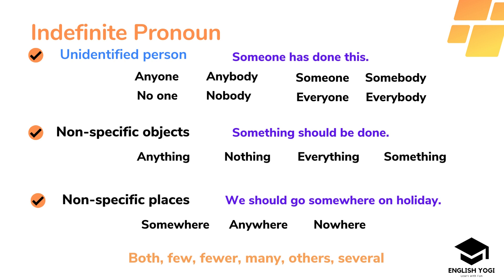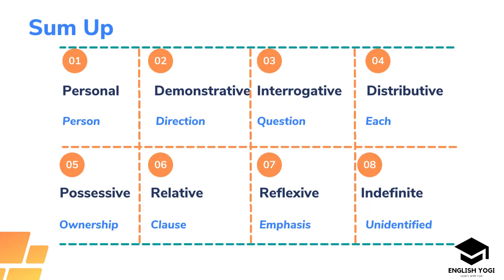Putting it in very simple language, indefinite pronouns are pronouns which are used for unidentified persons, non-specific objects and non-specific places. To sum up, there are commonly eight types of pronouns: personal, demonstrative, interrogative, distributive, possessive, relative, reflexive and indefinite. Personal pronoun is for a person; demonstrative pronoun is for direction; interrogative is for questions; distributive is for separate members; possessive is for ownership; relative introduces a clause; reflexive gives emphasis; and indefinite refers to unidentified places, persons or things.